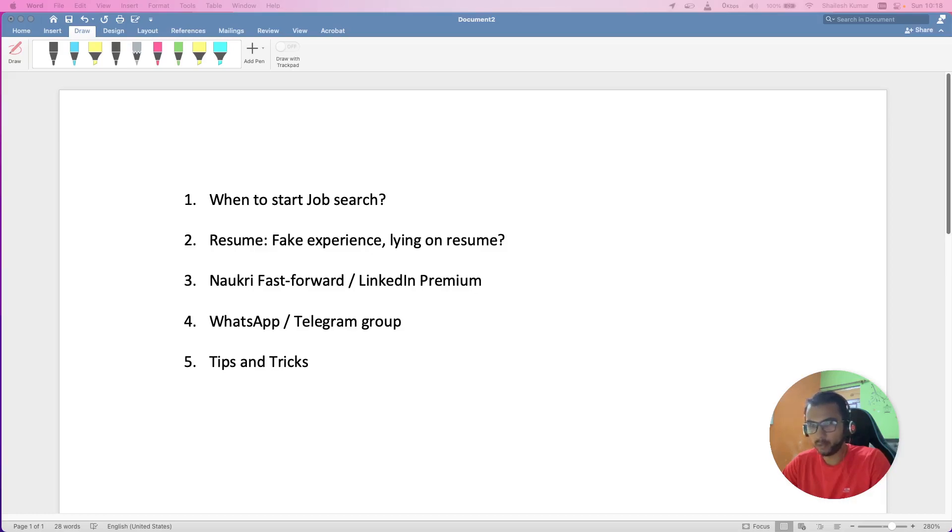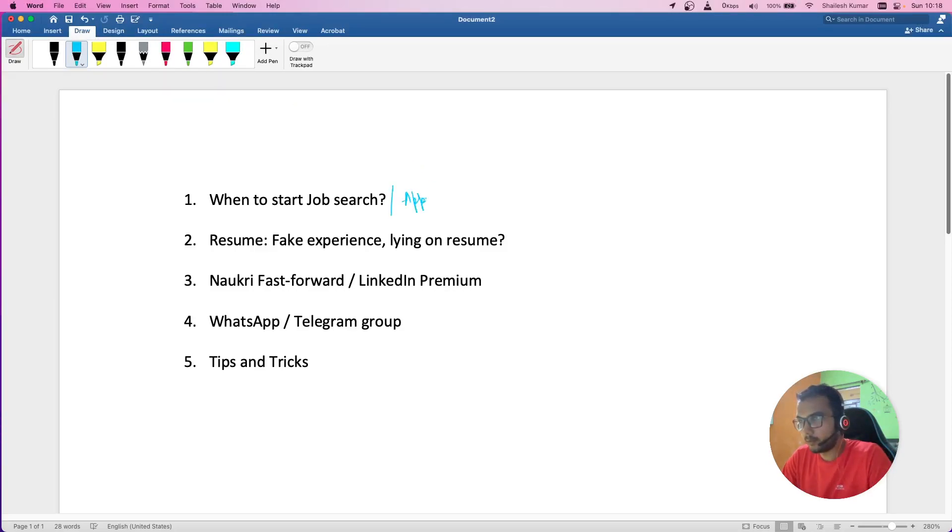Now the first question is when to start the job search and when should you start applying. So when you should be in a position to apply for jobs? In my case, first you have to define what all you need to cover. Let's say I'm assuming you are a two years automation engineer, so when is the right time you should apply? For this, first you have to define syllabus or what are the topics which you need to cover.